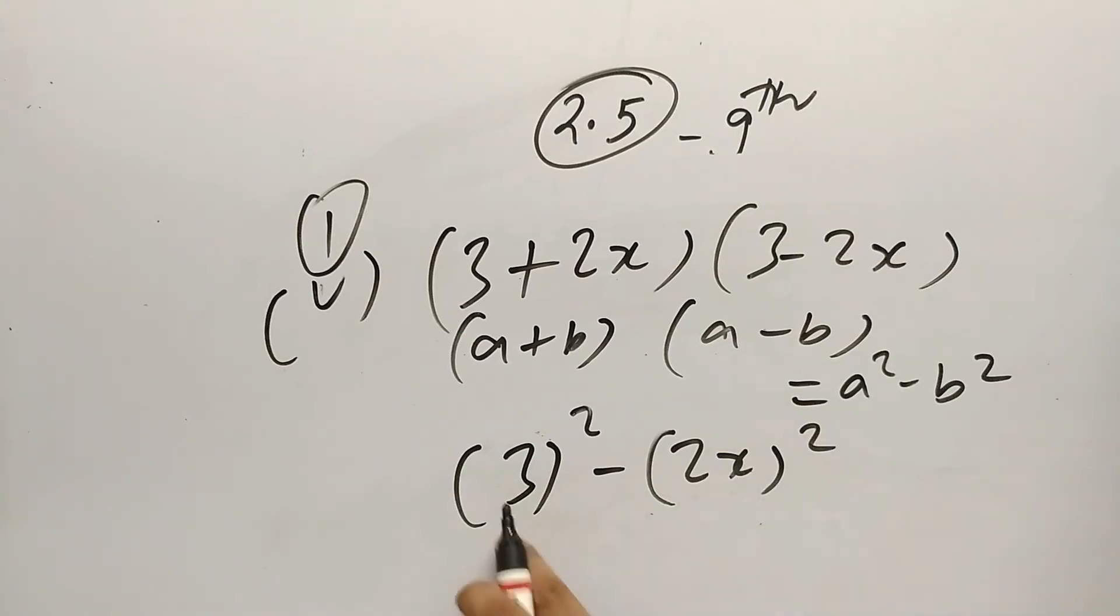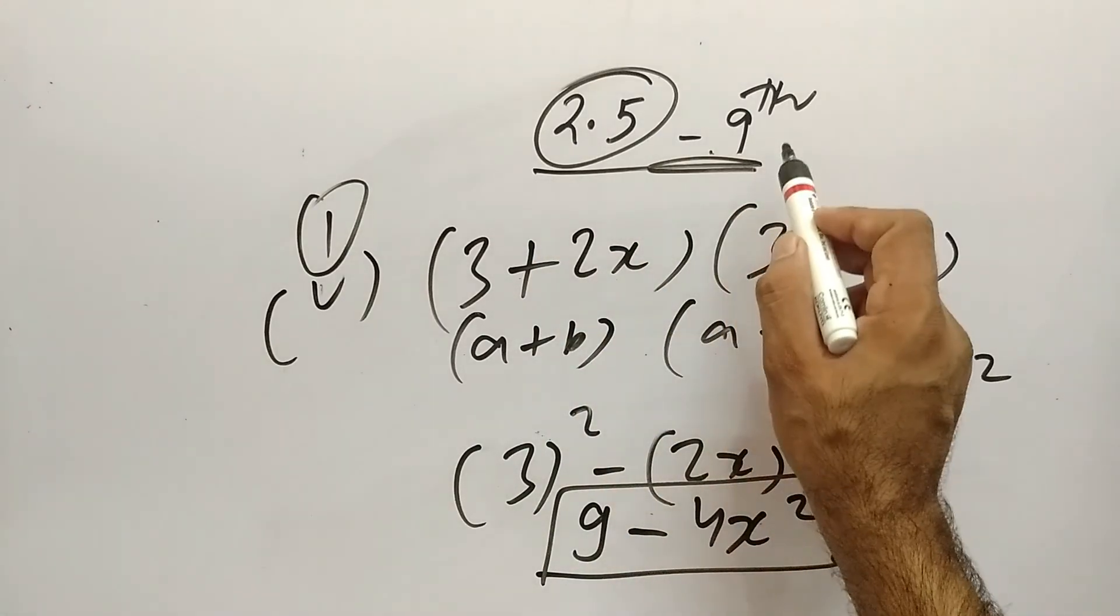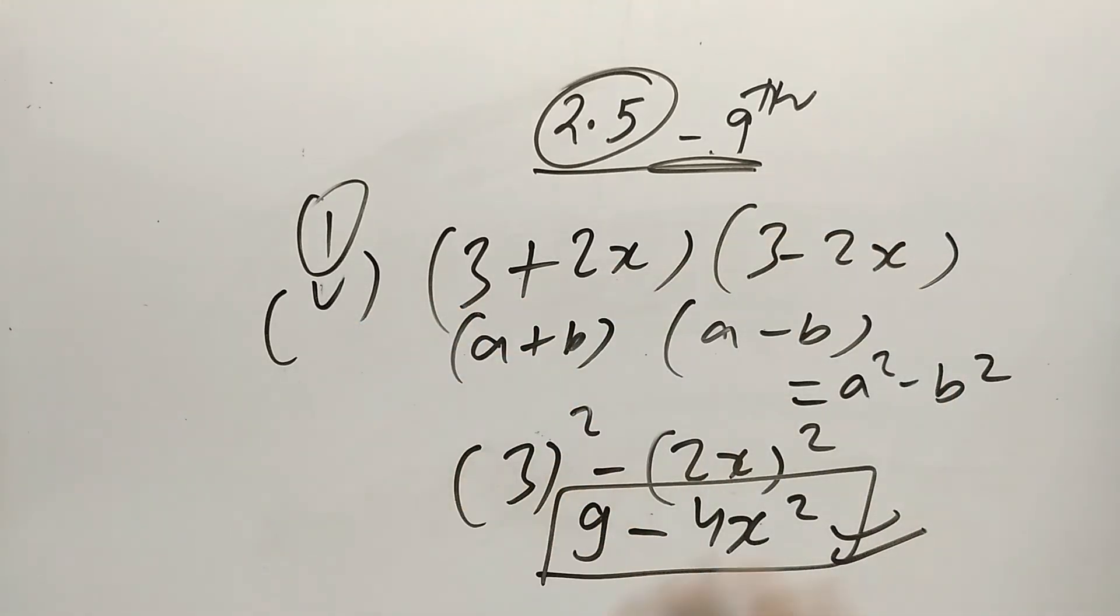So 3² - (2x)². This becomes a² - b². 3 squared is 9, 2 squared is 4, x squared. So 9 - 4x². I hope you understand this. So we have solved the complete first question of Exercise 2.5.